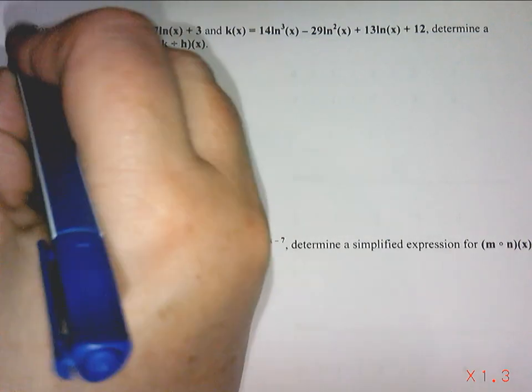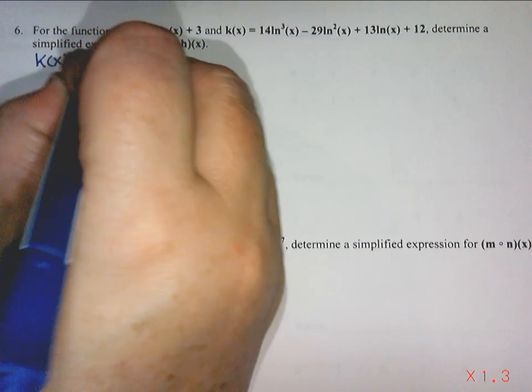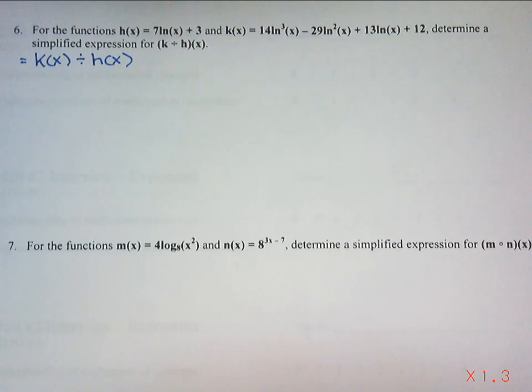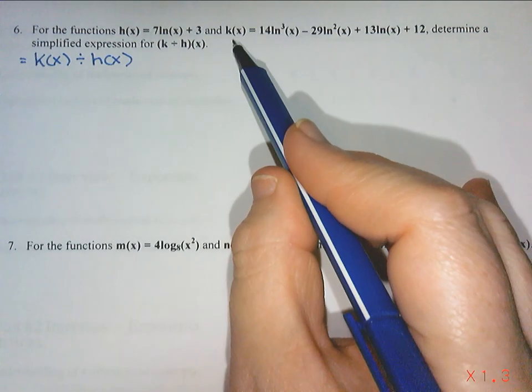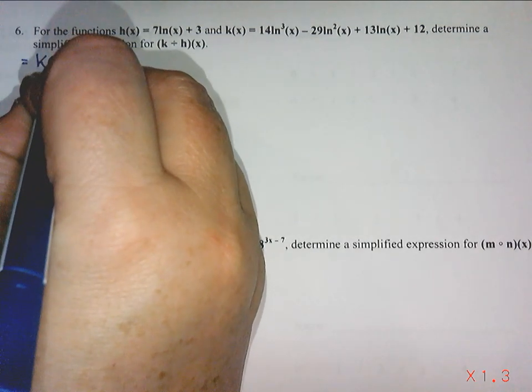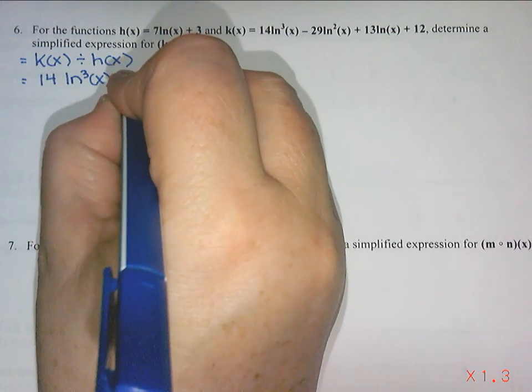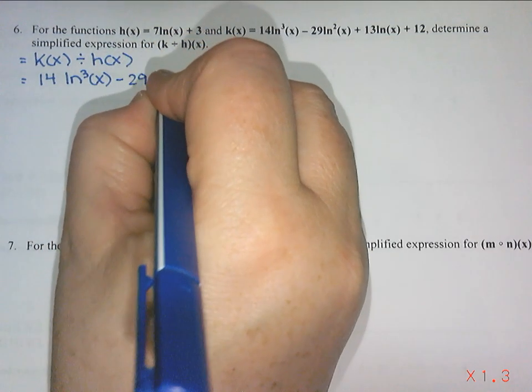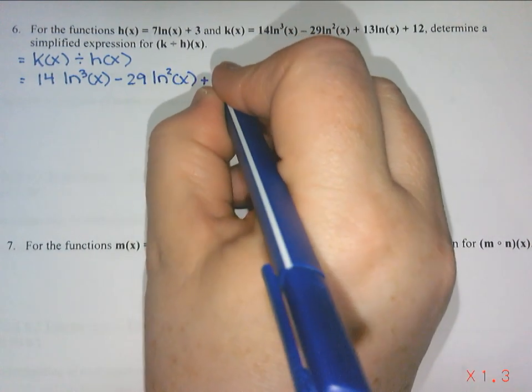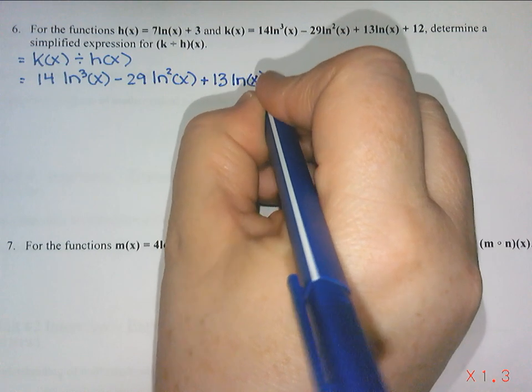So k divided by h of x is just k of x divided by h of x. k of x is this very long expression. So 14 ln cubed x minus 29 ln squared x plus 13 ln x plus 12.